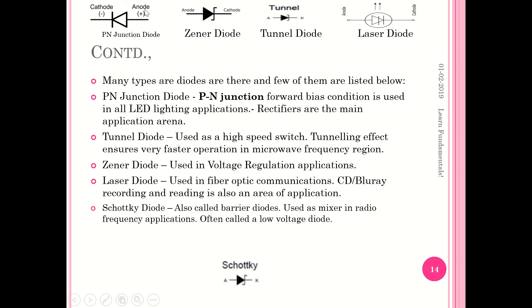The next one is the zener diode, where you can see the symbol is drawn like this. It is used in voltage regulation applications. Next one is the tunnel diode. Tunnel diode is a high speed switch. The tunneling effect ensures the fastest operation even in the microwave frequency region. So the major application for tunnel diode is in high speed switch requirements.